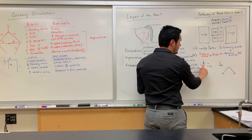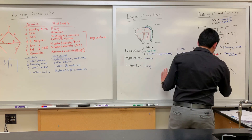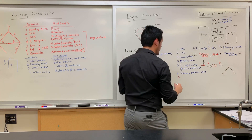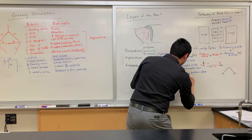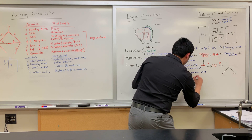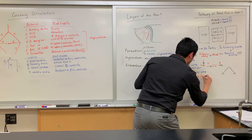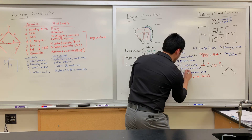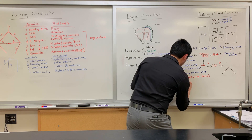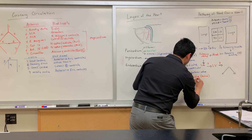In order to get from the left atrium to the left ventricle, blood travels through the bicuspid valve, also known as the mitral valve, or the left atrioventricular valve.